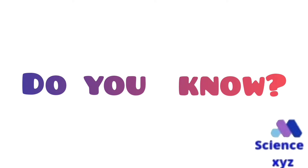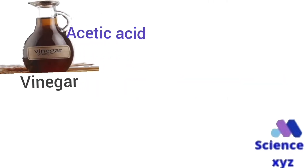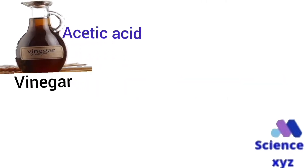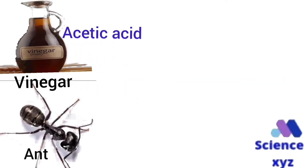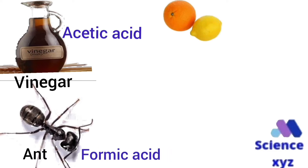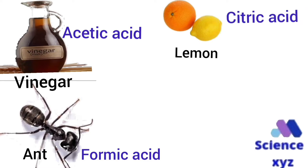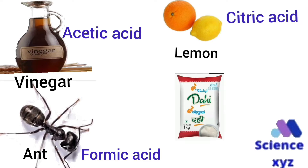Do you know, student, which acid is present in a particular substance? Acetic acid is present in vinegar, formic acid is present in ant sting, citric acid is present in lemon, and lactic acid is present in curd.